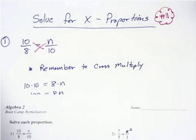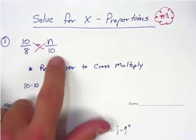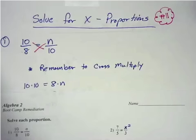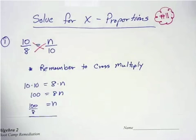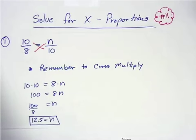Okay, so when you do that, you're going to have 10 times 10 equals 8 times n, and then basically the 10 times 10 turns into 100. You divide by 8, and you get 100 divided by 8, which then turns into 12.5.